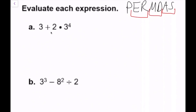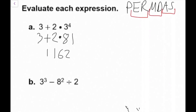For the first one, we have 3 plus 2 times 3 to the 4th power. We don't see any parentheses, but I do see an exponent, so I evaluate that first. 3 to the 4th power is 81 — you can do 3 times 3 is 9, times 3 is 27, times 3 is 81. Bring everything else down. Now I have 81 times 2 plus 3. I do multiplication next: 2 times 81 is 162. Then bring down the plus 3. Finally, 3 plus 162 equals 165, which is our final answer.